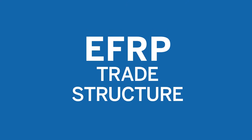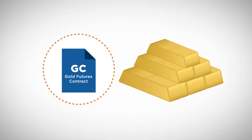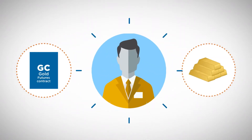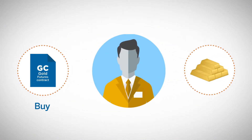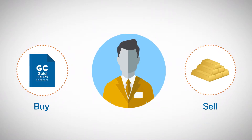Let's look at the structure of an EFRP trade. Remember that an EFRP involves two legs: an exchange contract, which could be a futures or options contract, and a related position component. This means that one party to the EFRP must be the buyer of the exchange contract and the seller of, or short, the related position.